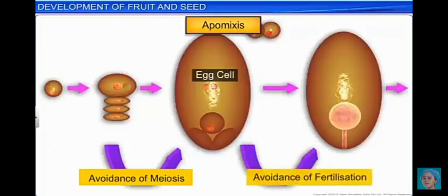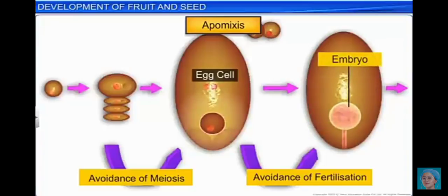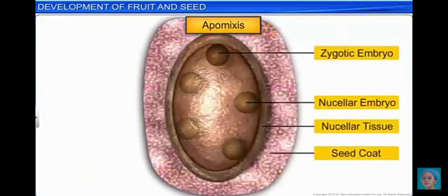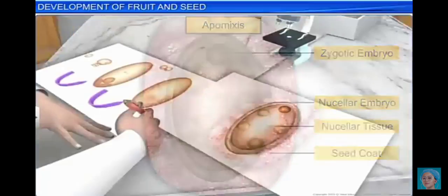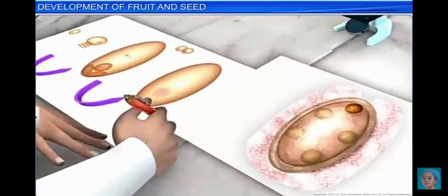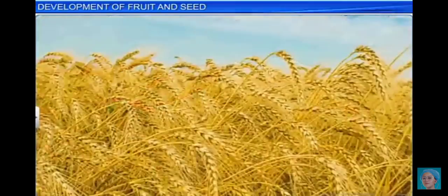In fact, seeds or embryos either develop from an unfertilized egg which did not undergo meiosis, or from the cells of the integument or nucellus. Botanists believe that converting hybrid crops into apomicts will prevent the segregation of characters in seeds produced by hybrid crops.